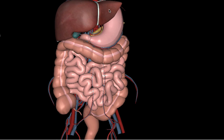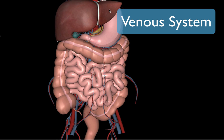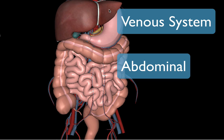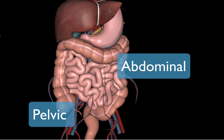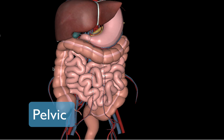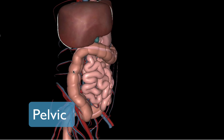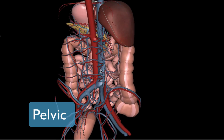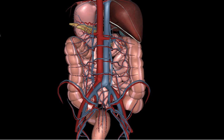In this anatomy and physiology video, we're going to be discussing the veins of the abdominal and pelvic region. We're going to take a posterior view of the abdomen, behind the intestines.